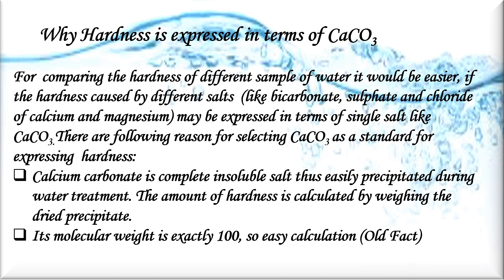Hardness is always expressed in terms of calcium carbonate. For comparing the hardness of different samples of water, it is easier if the hardness caused by different salts — like bicarbonate, sulfate, and chloride of calcium and magnesium — is expressed in terms of a single salt, calcium carbonate. The reasons for selecting calcium carbonate as the standard are: first, it is a completely insoluble salt, so it is easily precipitated during water treatment and the amount of hardness can be calculated by weighing the dried precipitate; and second, its molecular weight is exactly 100, making calculation easy.